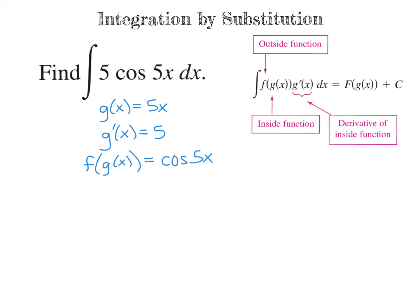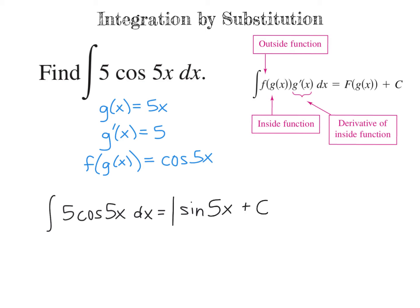In order to find the integral of this composite function, we follow the formula and find the antiderivative of f. Our f function is the cosine of something, and the antiderivative of cosine is sine of something. That something is our inside function g of x, so it's going to be the sine of 5x, and then of course plus c. So that should be our answer.